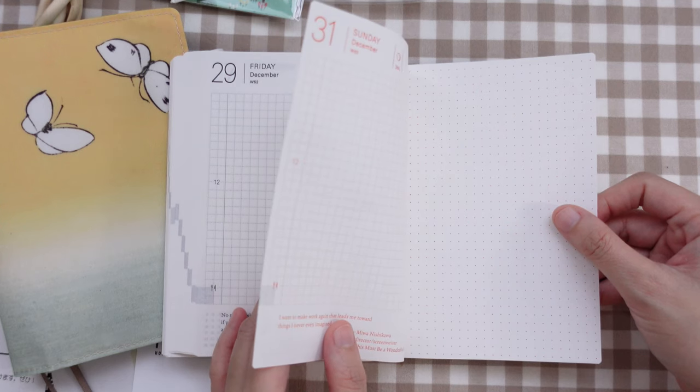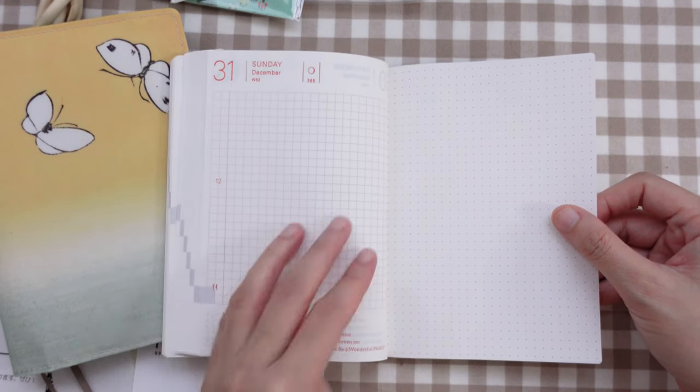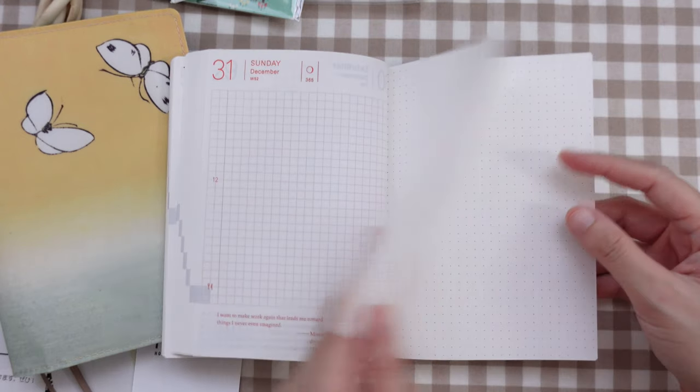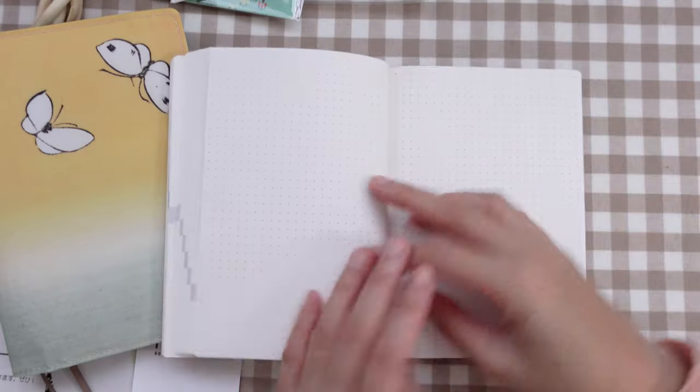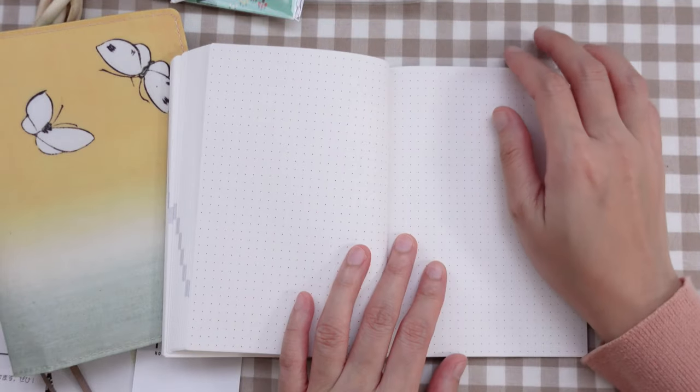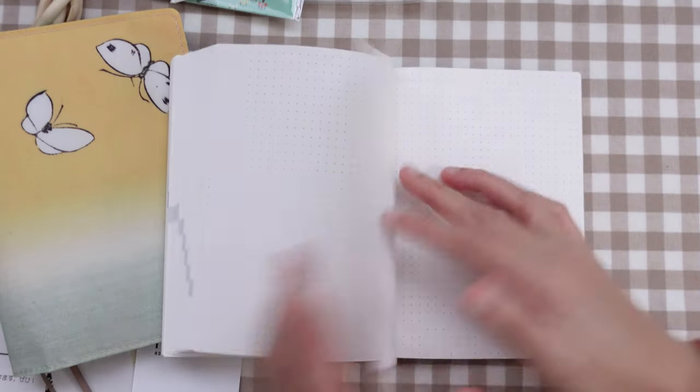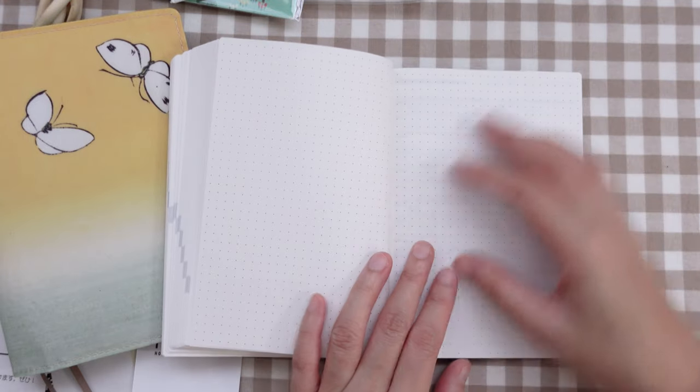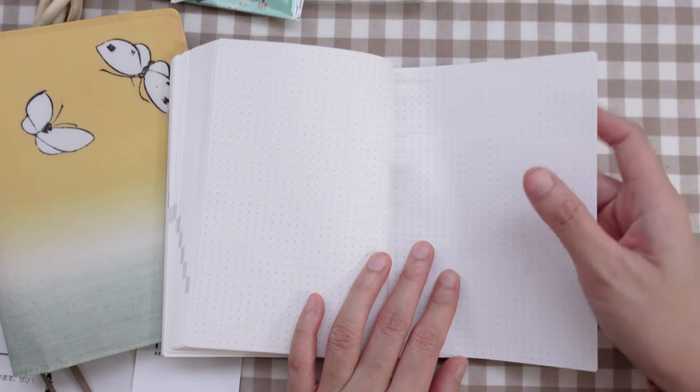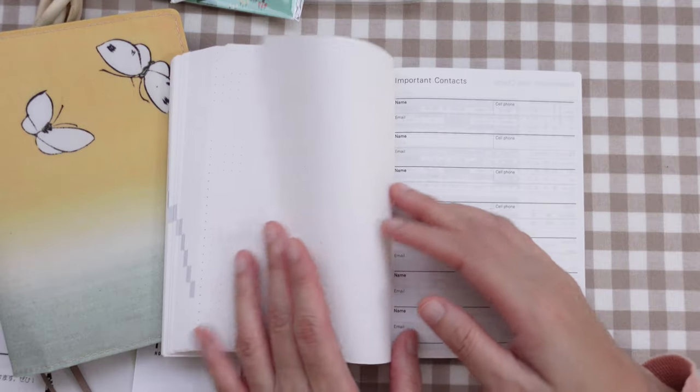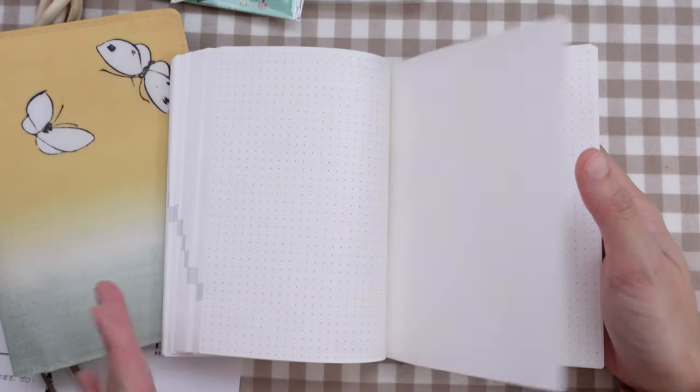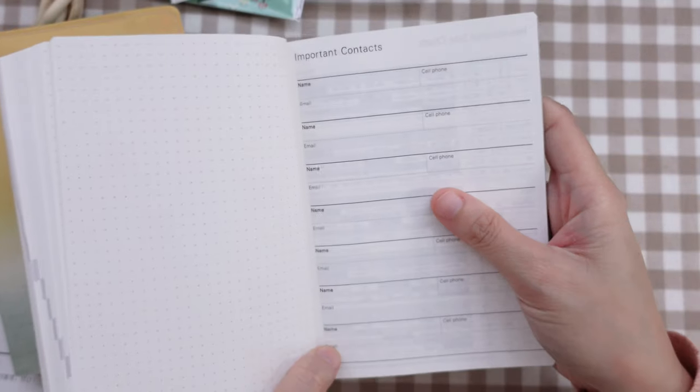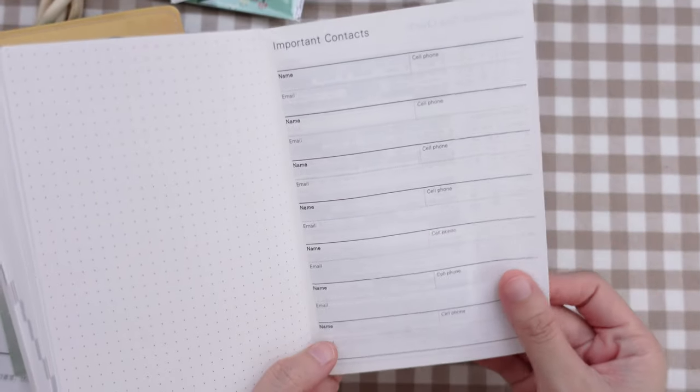And here at the bottom right side, we have a mini calendar. So the daily pages go all the way to December 31st. And it's then followed by some dotted pages.